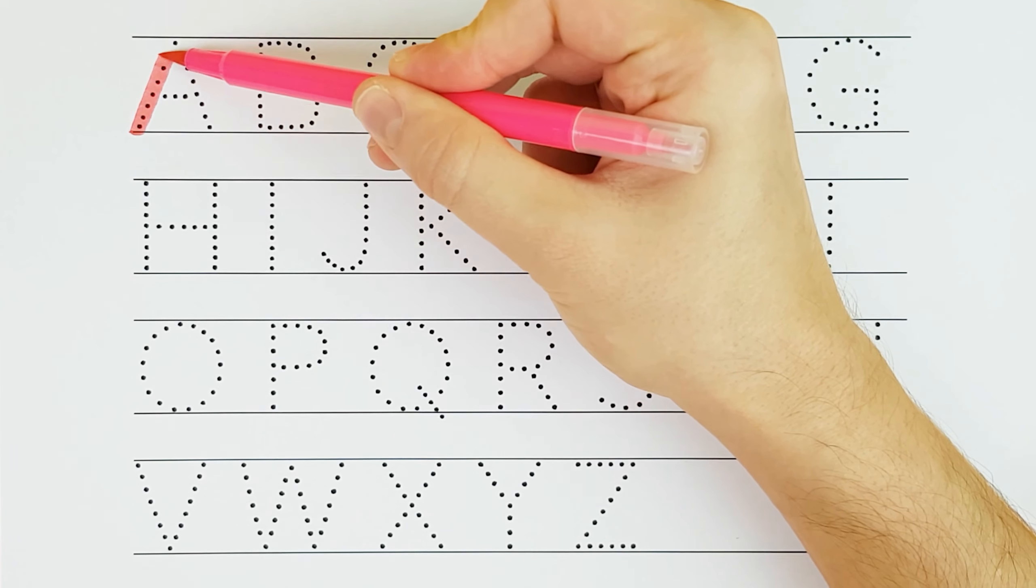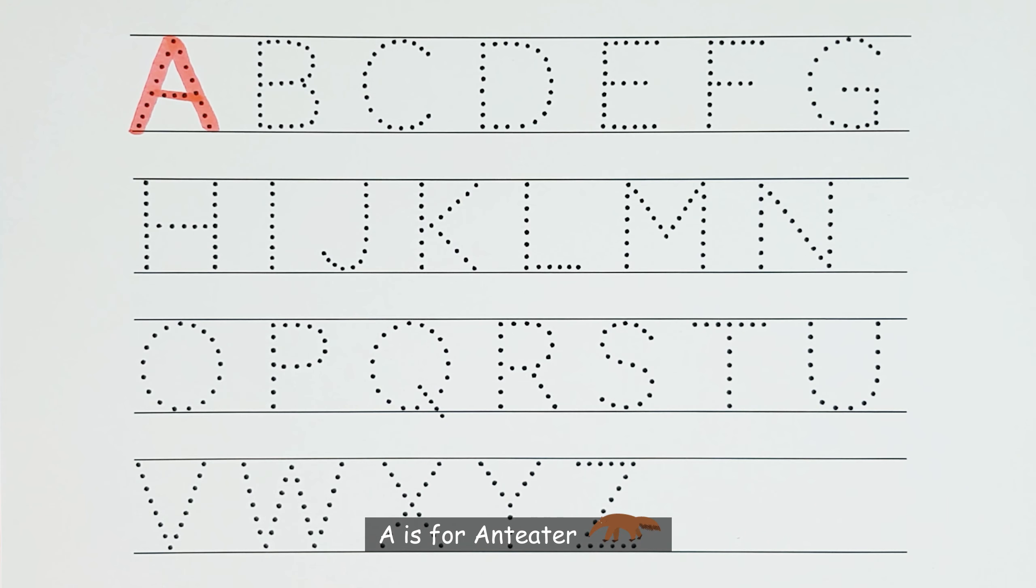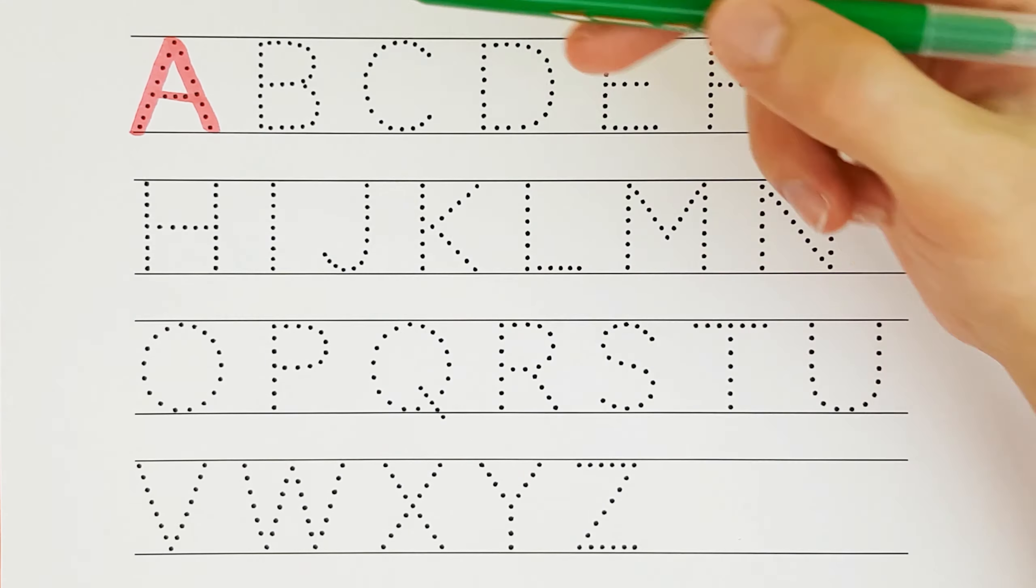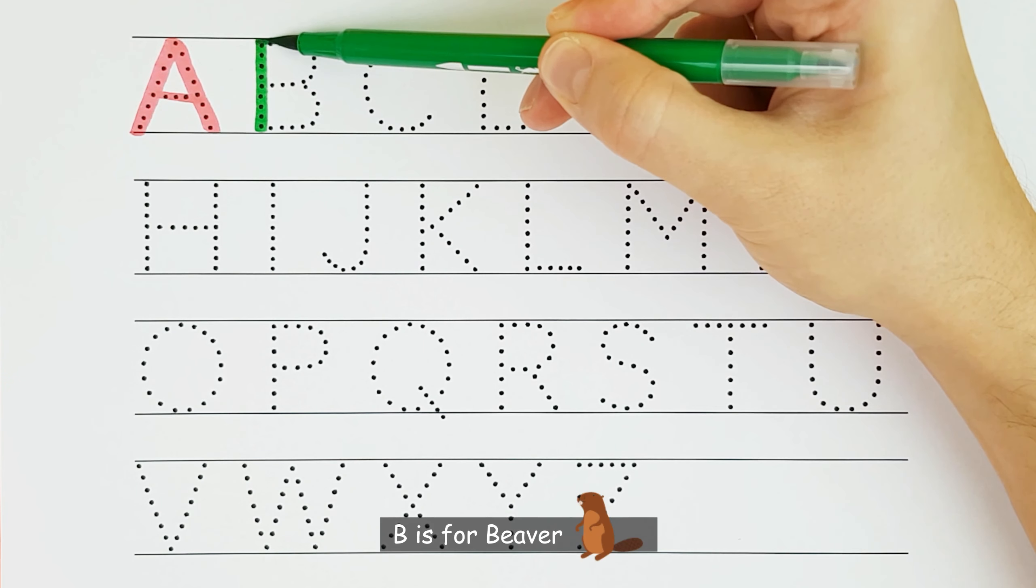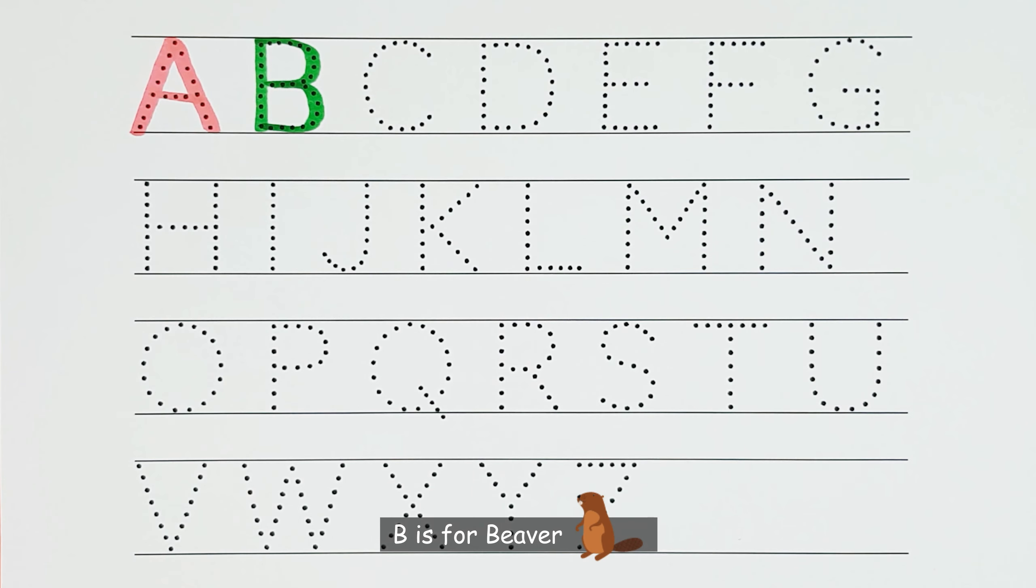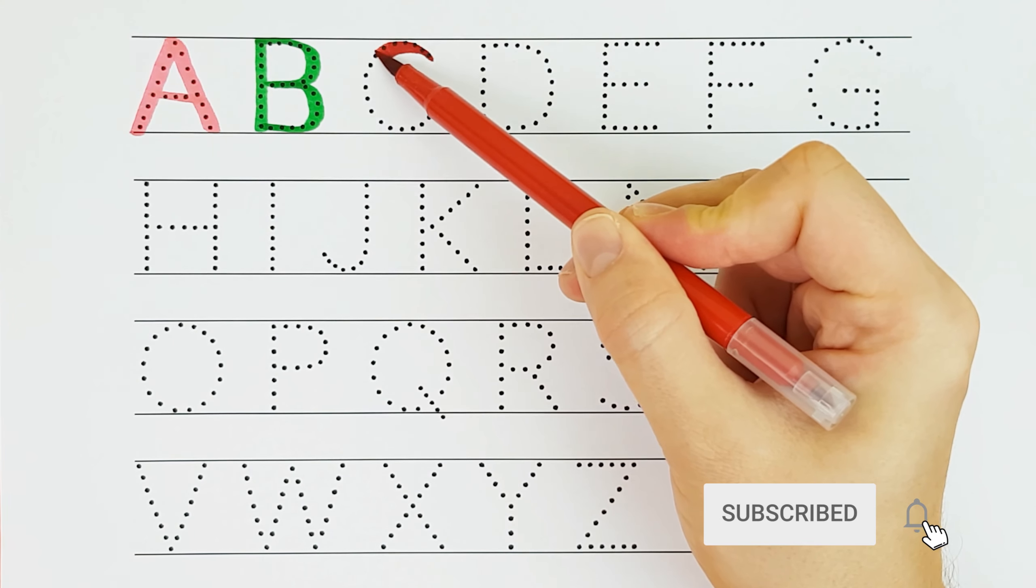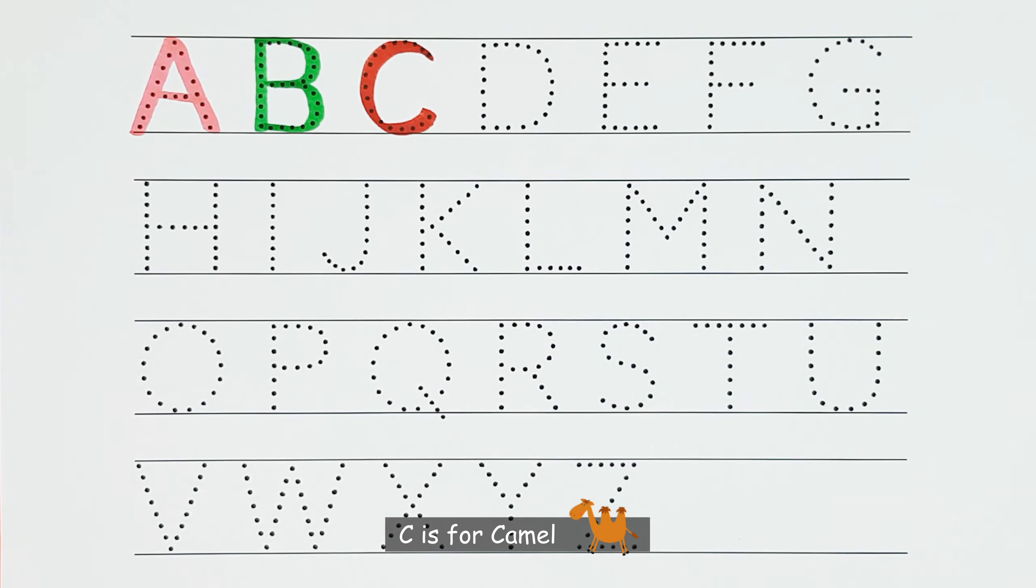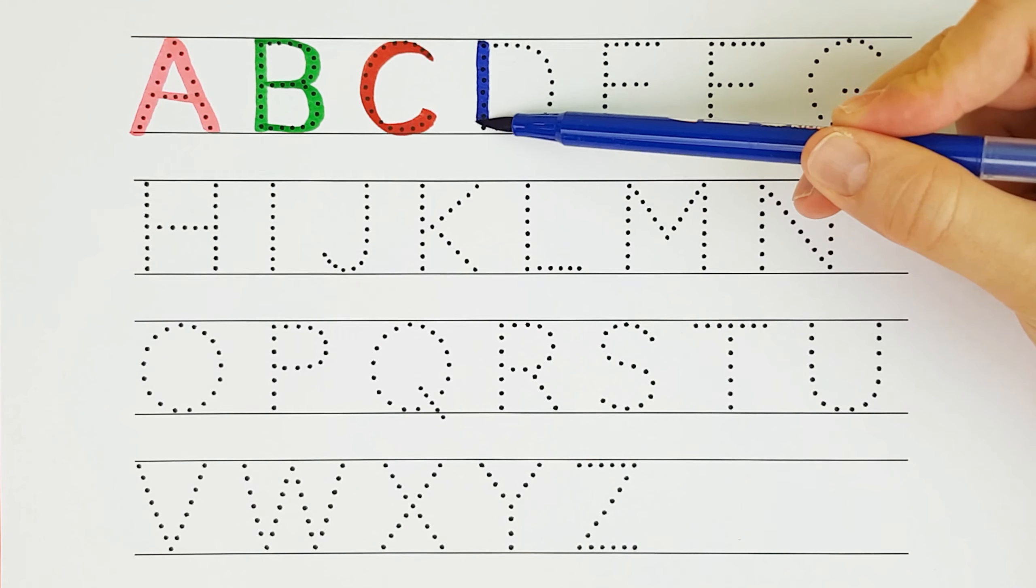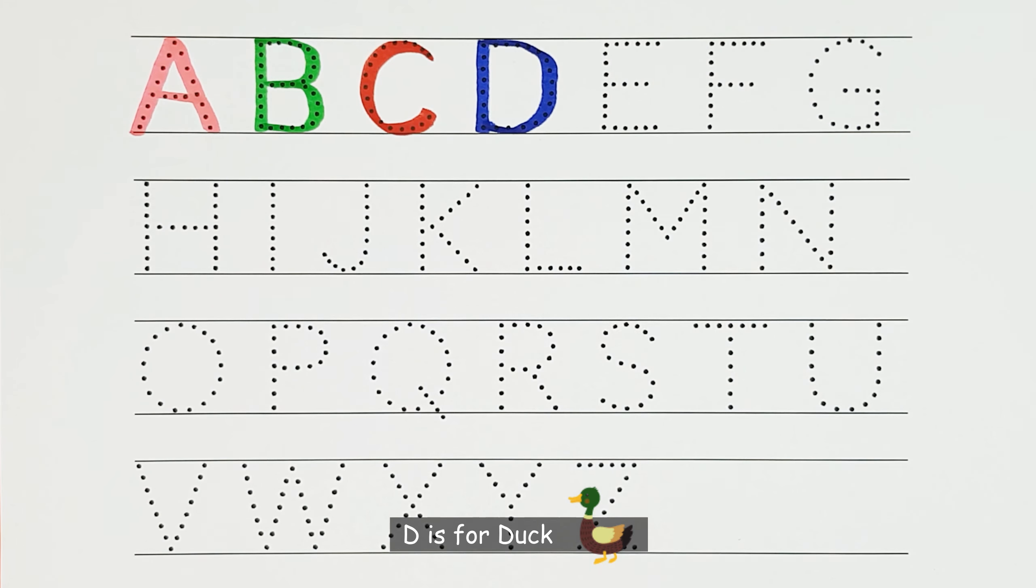A. A is for Anteater. A. B. B is for Beaver. B. C. C is for Camel. C. D. D is for Duck. D.